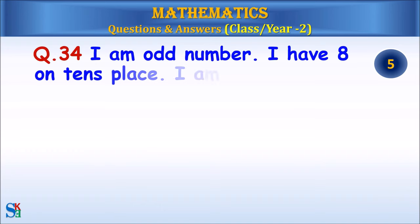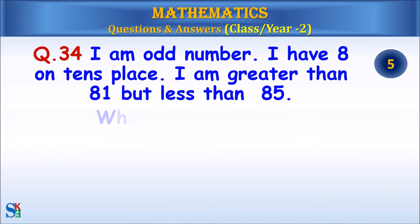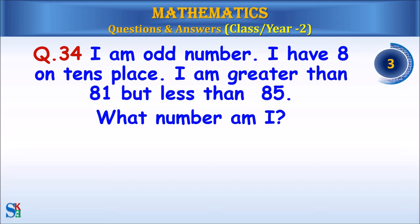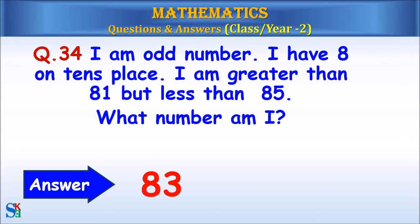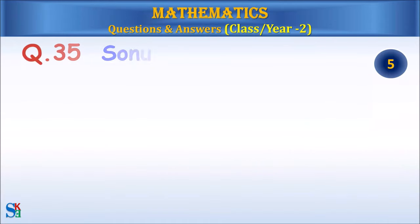Question 34: I am an odd number. I have 8 on the tens place. I am greater than 81 but less than 85. What number am I? Answer: 83.